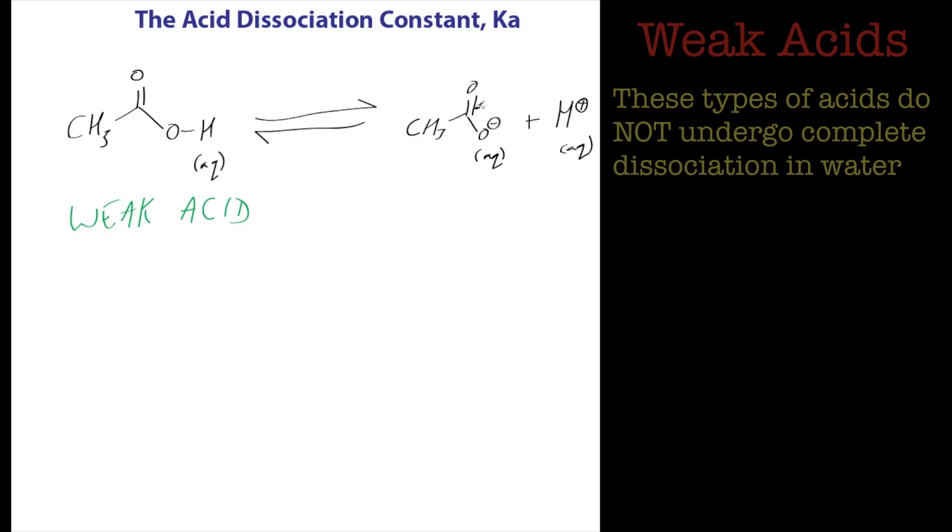We would find that not all of it would give rise to all these protons, so it wouldn't go to completion. What would happen is some of this would be in equilibrium, and you'd have a certain amount of this, a certain amount of this, and a certain amount of this.